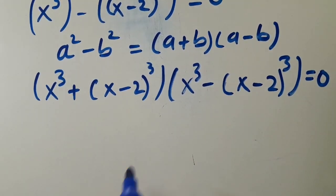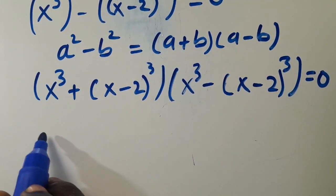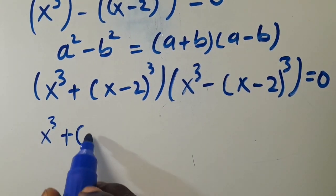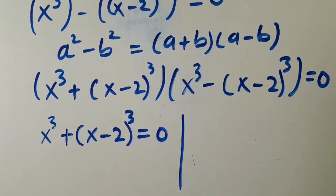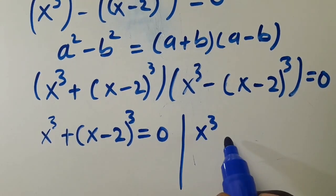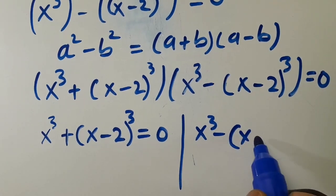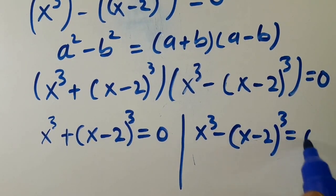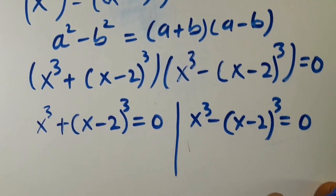For this expression to equal 0, it's either we have x to the power of 3 plus x minus 2 to the power of 3 equals 0, or we have x to the power of 3 minus x minus 2, close bracket, to the power of 3 equals 0.